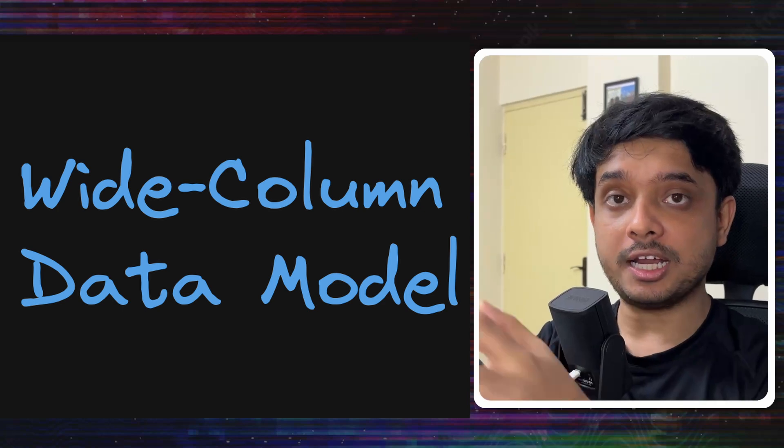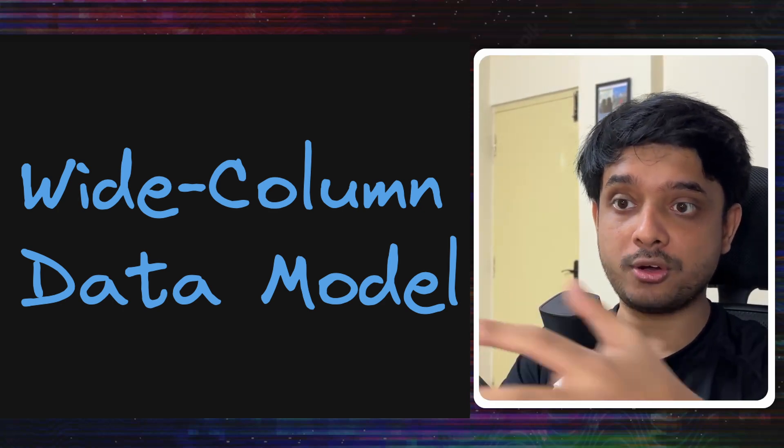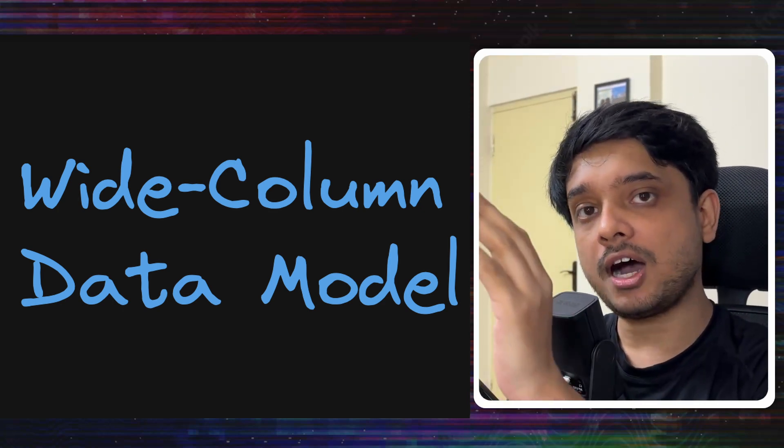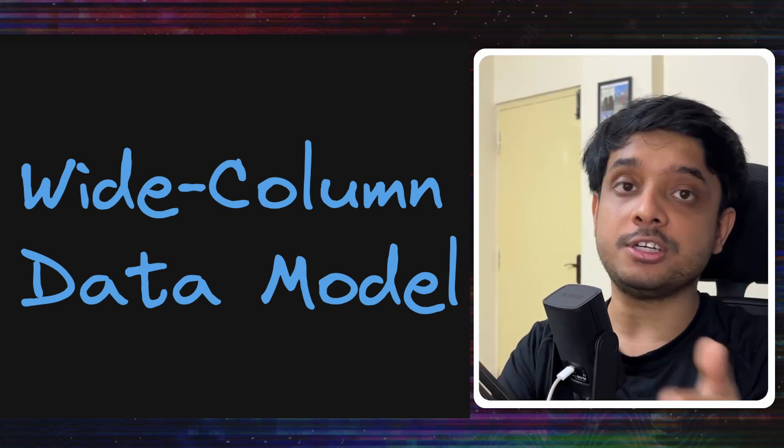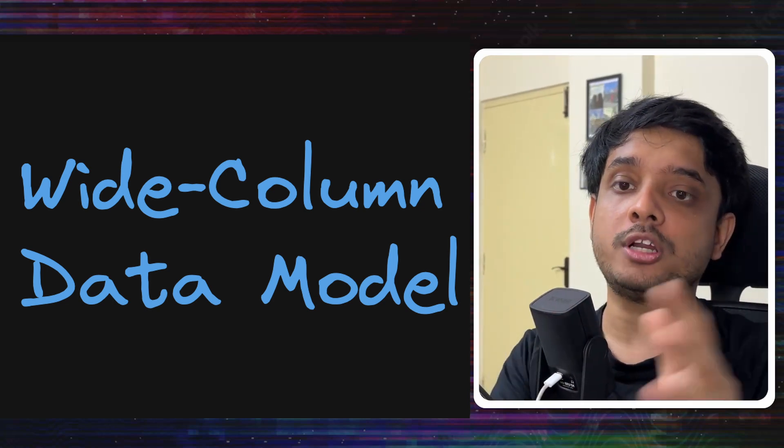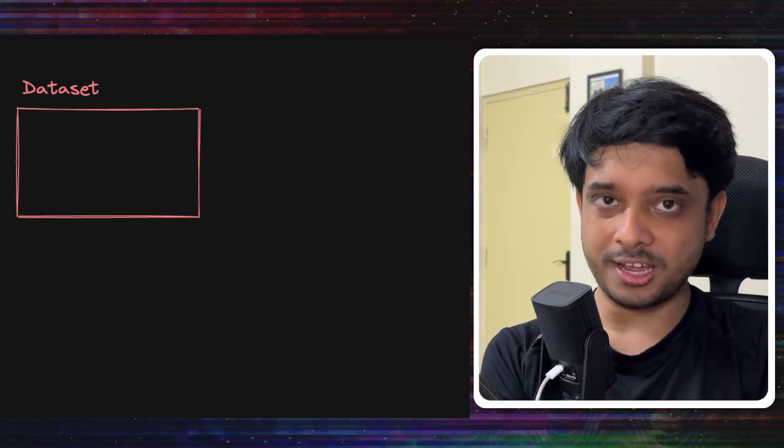So first let's understand the particular data model of Pinterest's Rockstore wide column database and then we will see how that data model translates into or maps into a key value data model or RocksDB's data model. The first thing that we need to talk about is a data set which is analogous to a table for any other database.